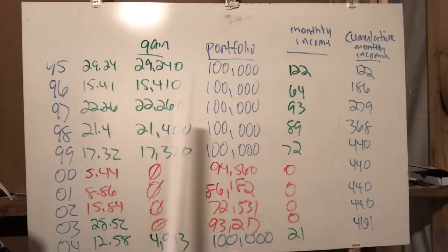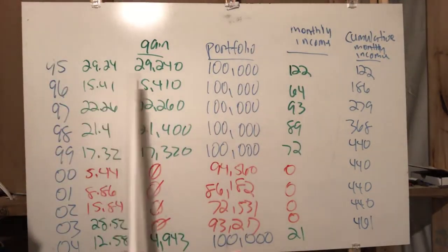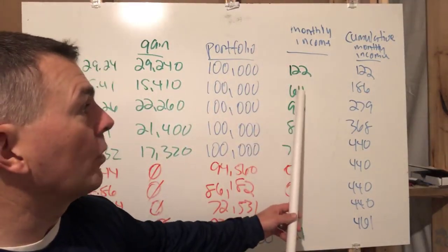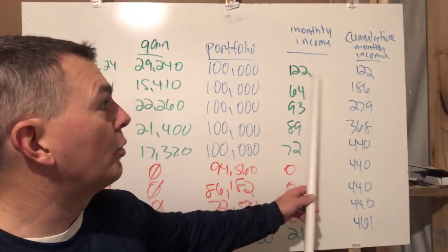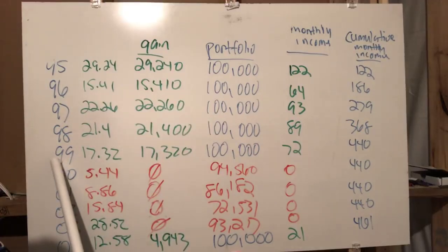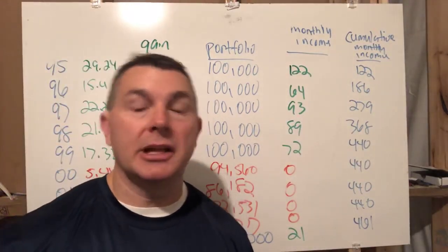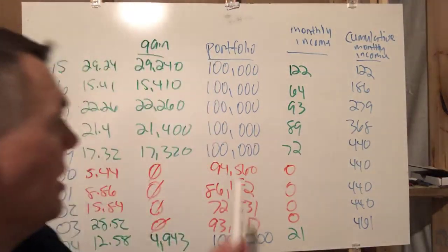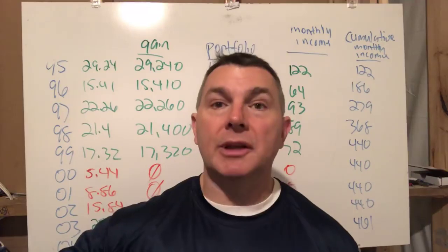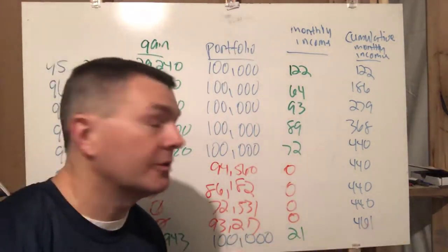So the scenario is: twenty-nine thousand dollar gain, annuitized at a five percent payout rate, pays us one hundred twenty-two dollars a month guaranteed for the rest of our life, added to whatever monthly income we had previously — which in this case is zero. Now we're back to a hundred thousand dollars in the portfolio. In 1996 it was up fifteen point four one percent, or fifteen thousand four hundred ten dollars. The five percent payout rate gives us sixty-four dollars a month. Sixty-four plus one twenty-two is one hundred eighty-six dollars. By the end of 1999 we're guaranteed four hundred forty dollars a month in income that we simply cannot outlive, and our portfolio is back to a hundred thousand dollars.